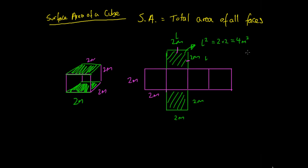We can work out the area of one face and we know that they're all the same. The area of the top is going to be 4 metres squared, and because all of our squares are the same with 2-metre by 2-metre dimensions, this square is 4 metres squared, this one is 4 metres squared, this next one is 4 metres squared — all six squares have an area of 4 metres squared.